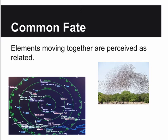Common fate: when you're doing animations, if you have a bunch of things moving together, they're perceived as related. Like a flock of birds all moving together - they're all related. In user interfaces, when we see two elements on a radar moving together, we tend to assume they're related because they're moving at the same time or in the same direction.